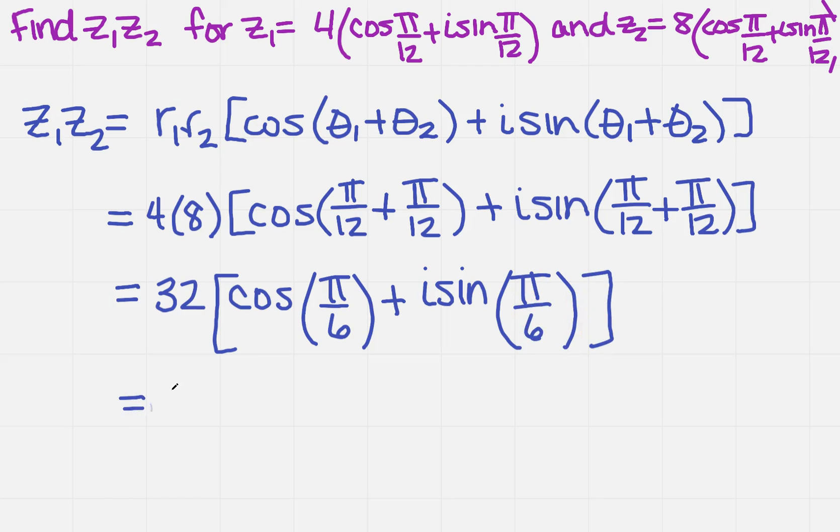Now I'm going to need the unit circle to help me. The cosine of pi over 6 is the square root of 3 over 2, and the sine of pi over 6 is 1 half.